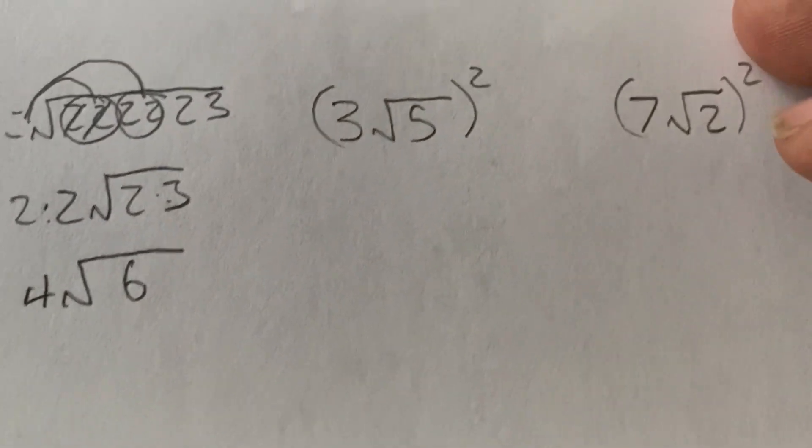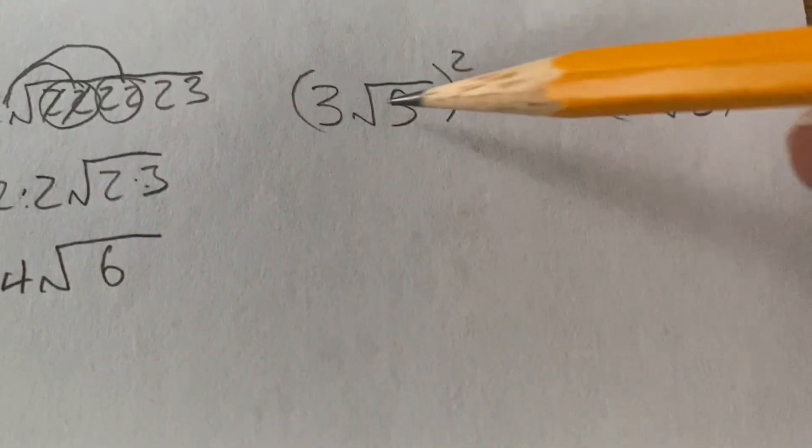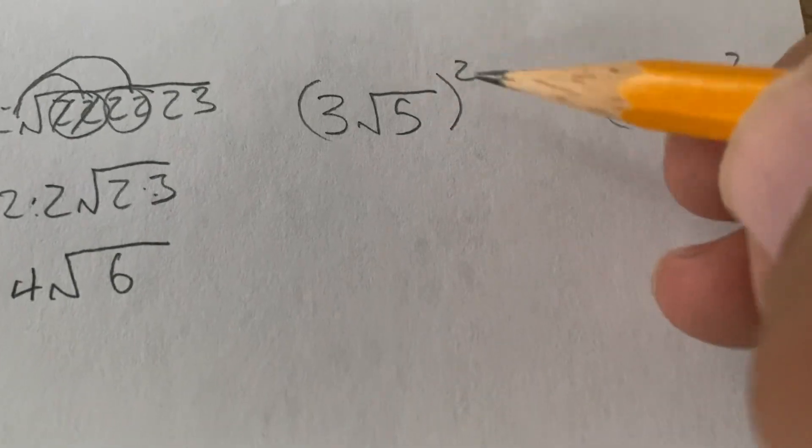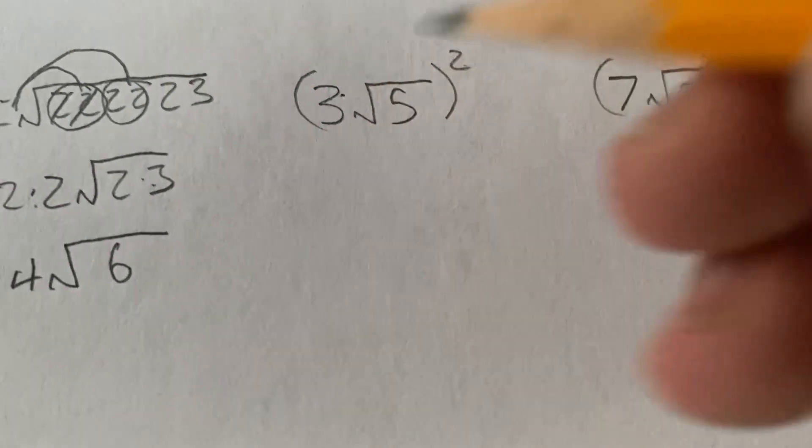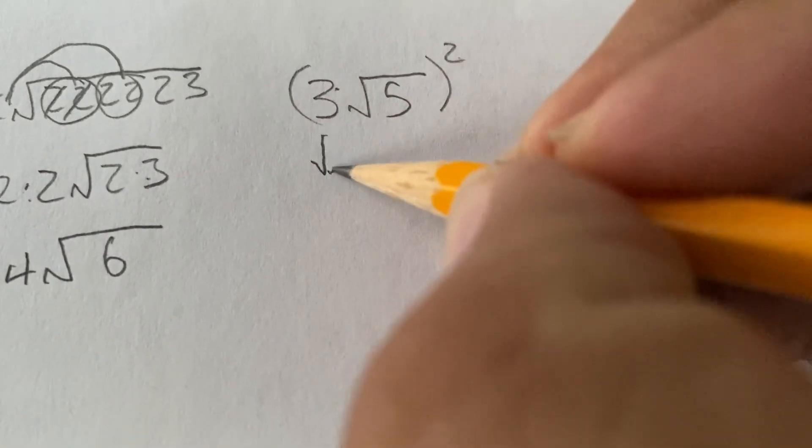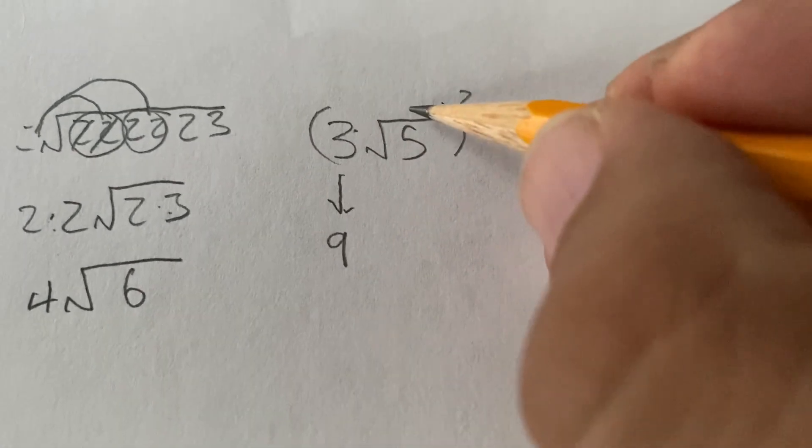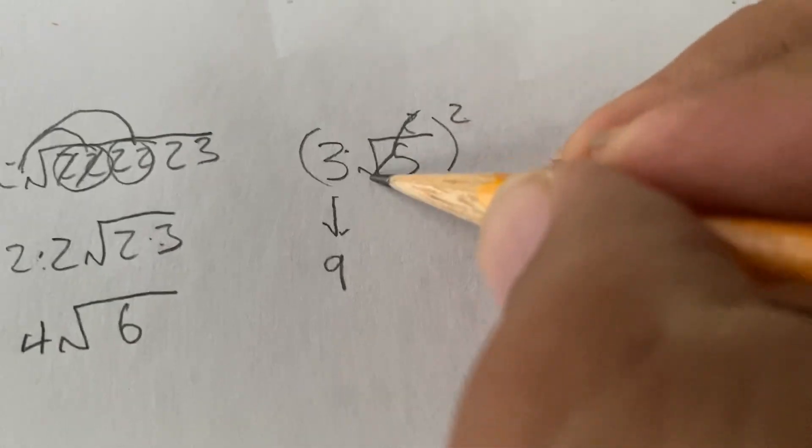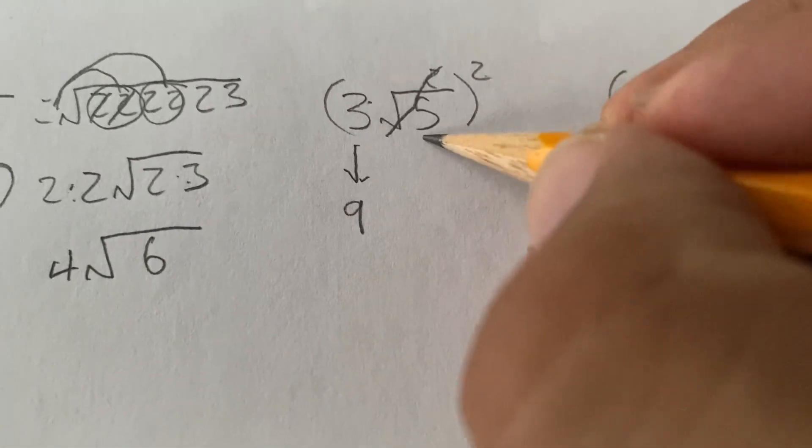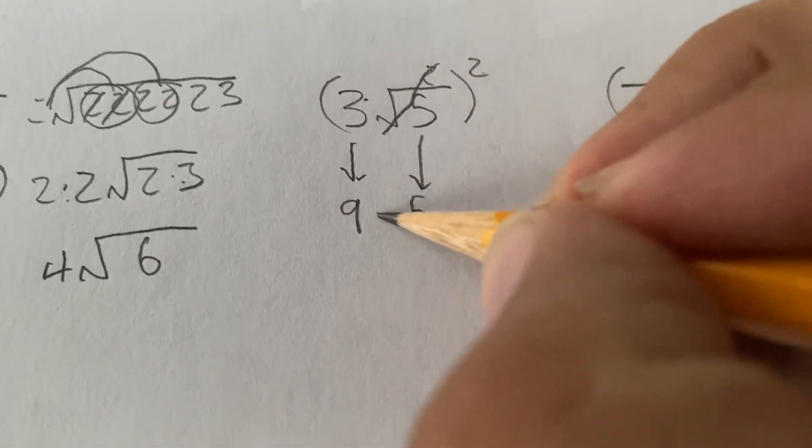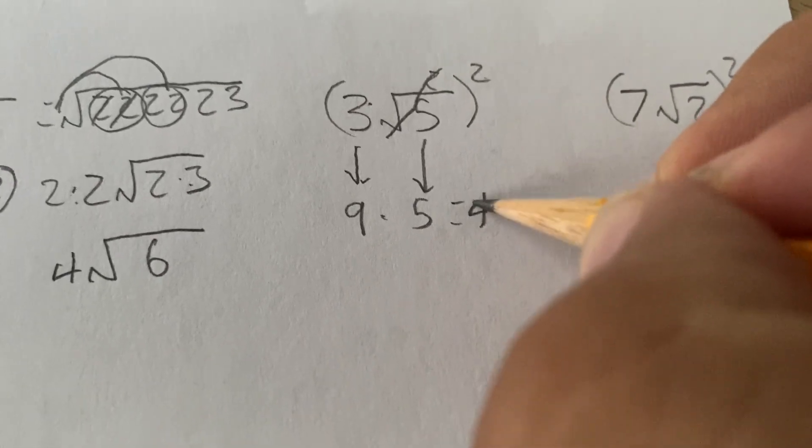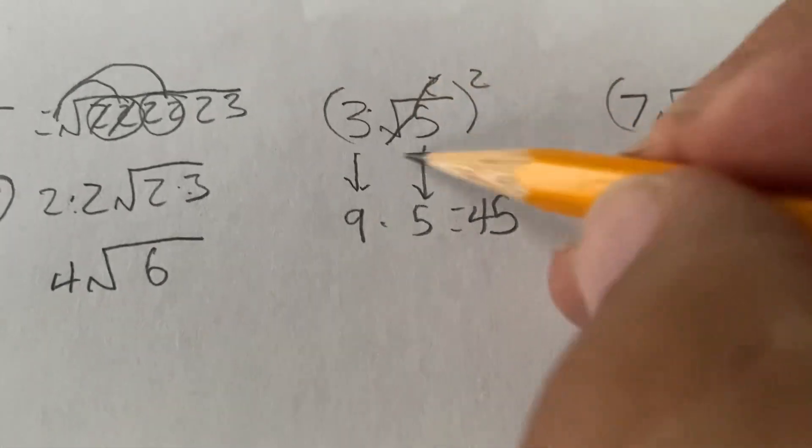Now, let's square something that's already been simplified. So, the 3 is going to get squared, causing it to be a 9. And then the square root of 5 is going to get squared. And because they cancel, it just has the 5 come down. So then the answer is 45 to this being squared.